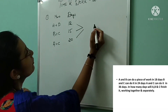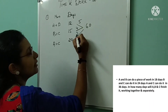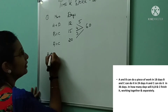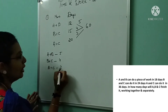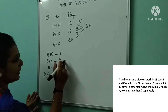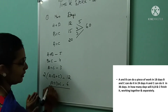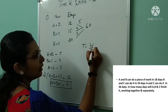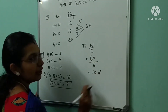LCM for 12, 15, and 20 is 60. So 12 × 5 = 60, 15 × 4 = 60, and 20 × 3 = 60. A + B's efficiency is 5, B + C's efficiency is 4, and A + C's efficiency is 3. On adding: 2(A + B + C) = 5 + 4 + 3 = 12, so A + B + C = 6. This is the combined efficiency. Number of days = T = W/E = 60 ÷ 6 = 10 days.